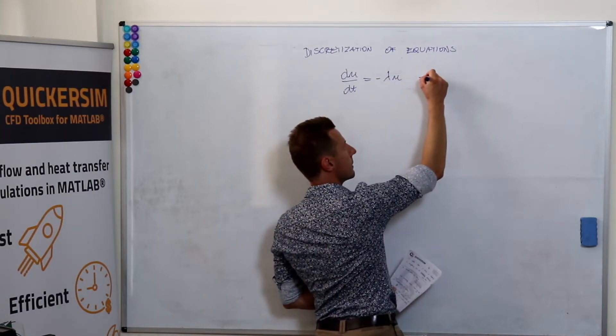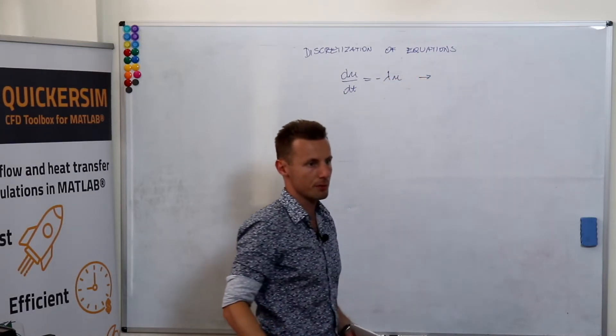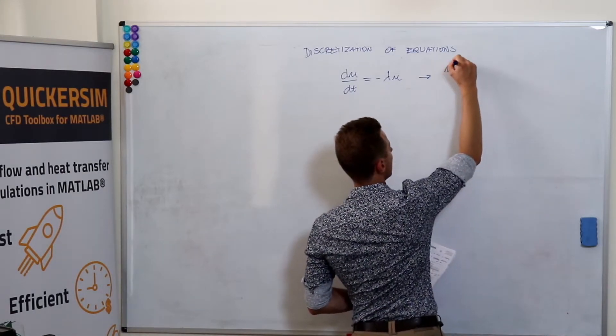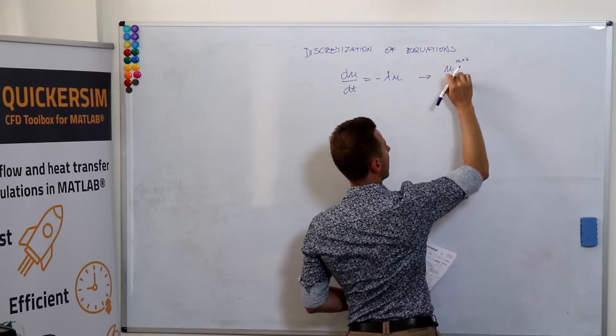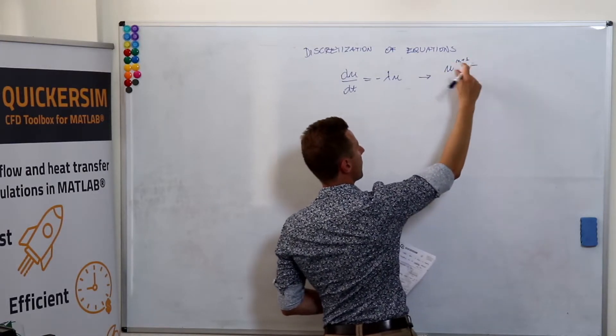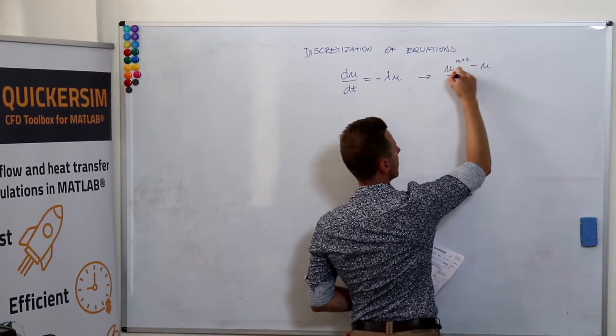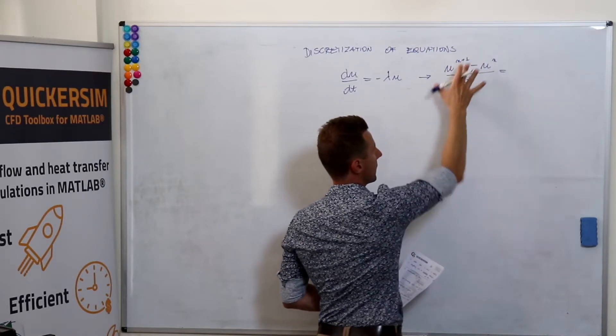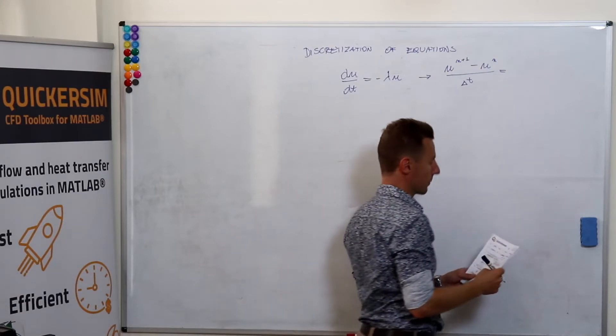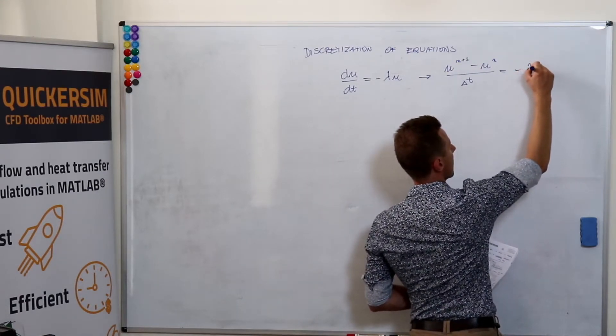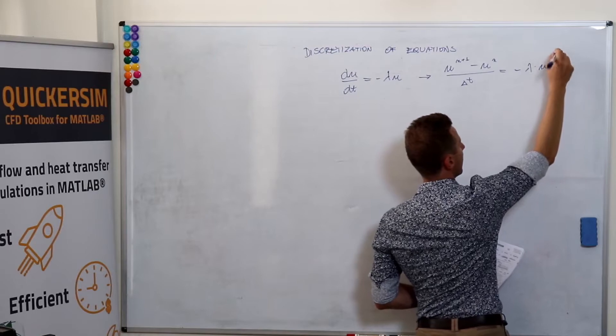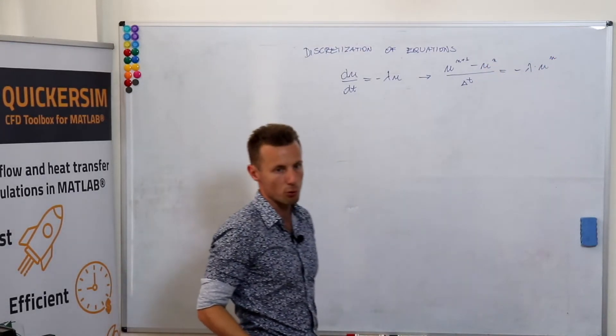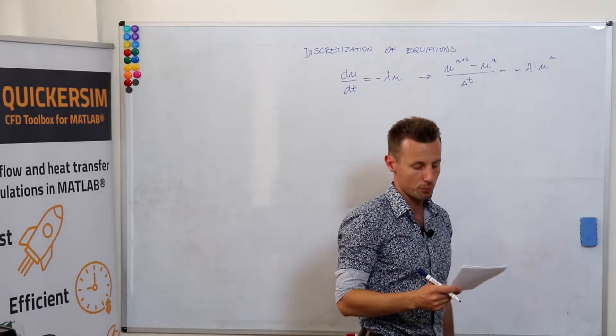What does it mean to discretize it? If we use the explicit Euler formula, this would mean that we want to have some representation of u at the new time step minus u at the current time step divided by time step. It's the approximation of the first time derivative minus lambda u at n taken from the current time step. This would be the forward Euler formula.